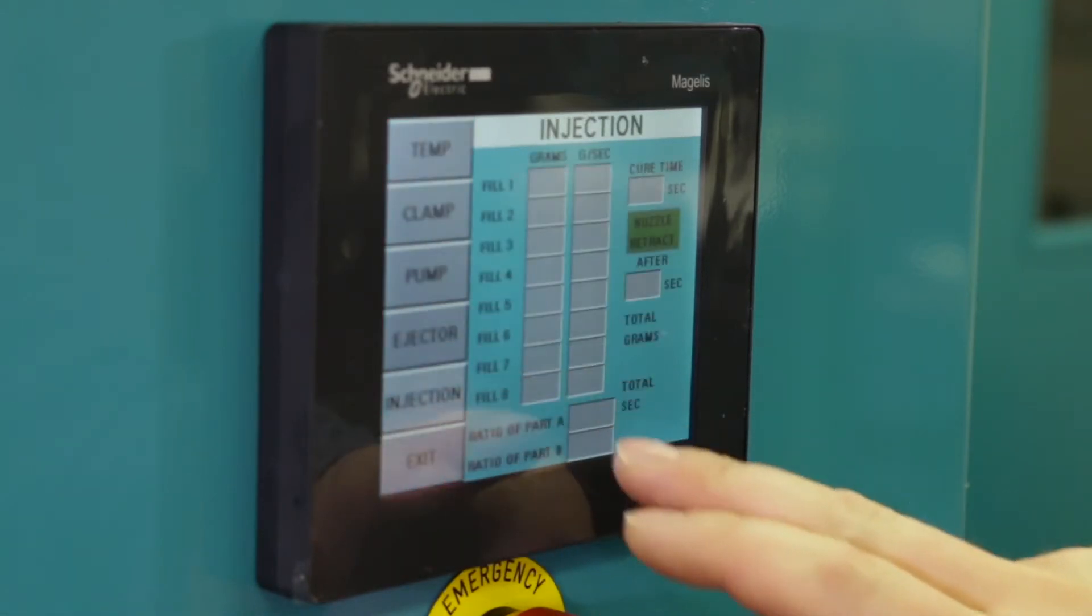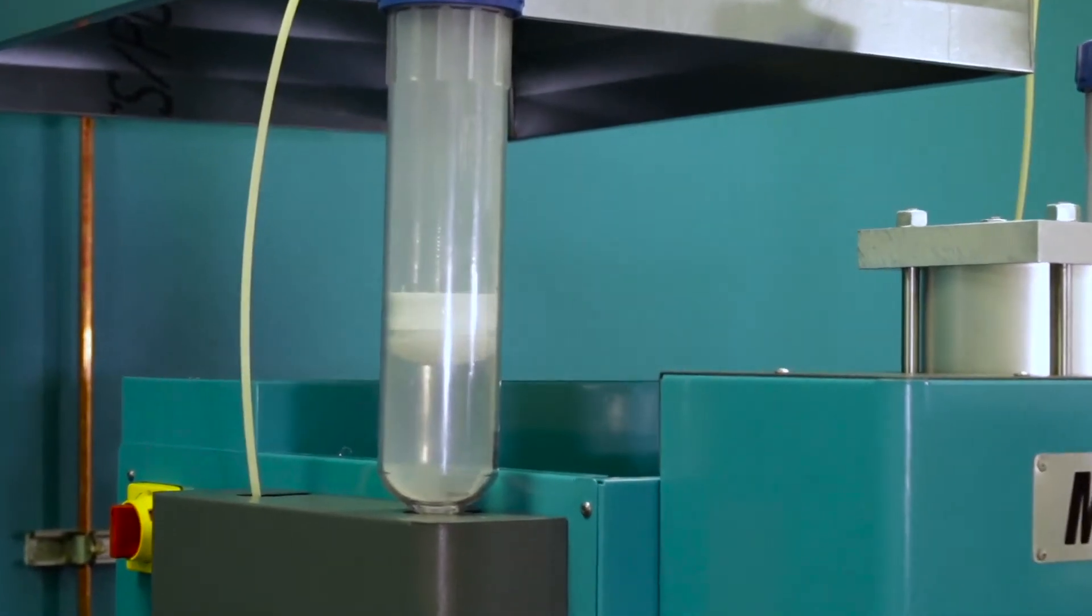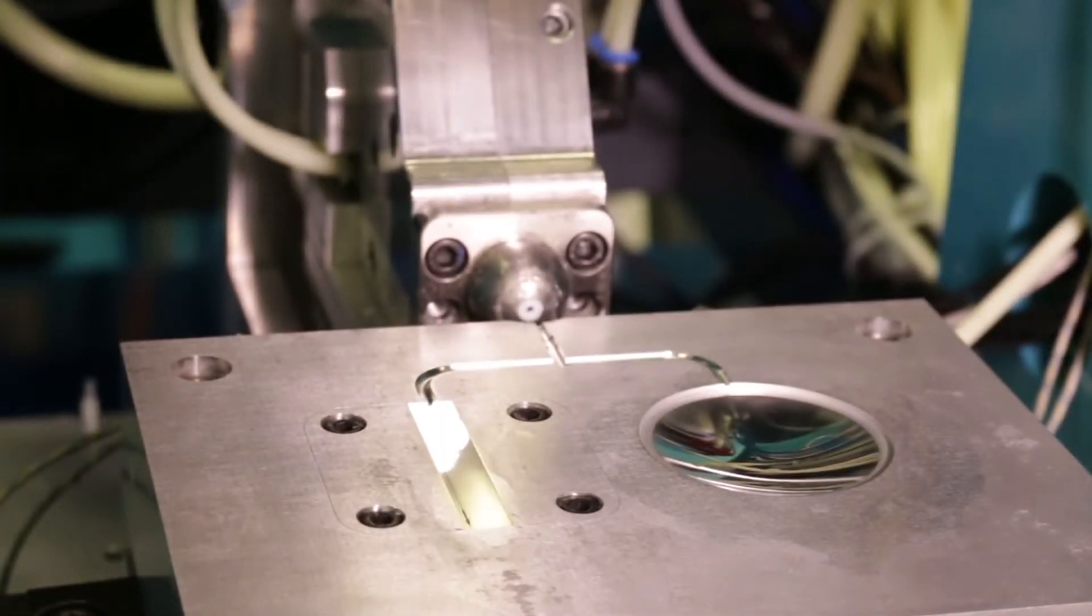The Moldman 2050 utilizes a unique patent-pending mix-on-demand precision metering system, located at the injection nozzle, designed for quick change of materials and clean-up.